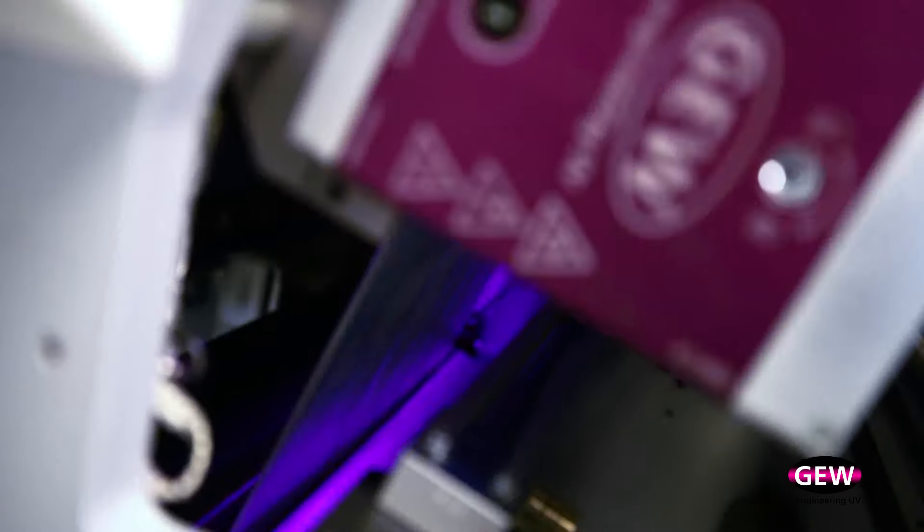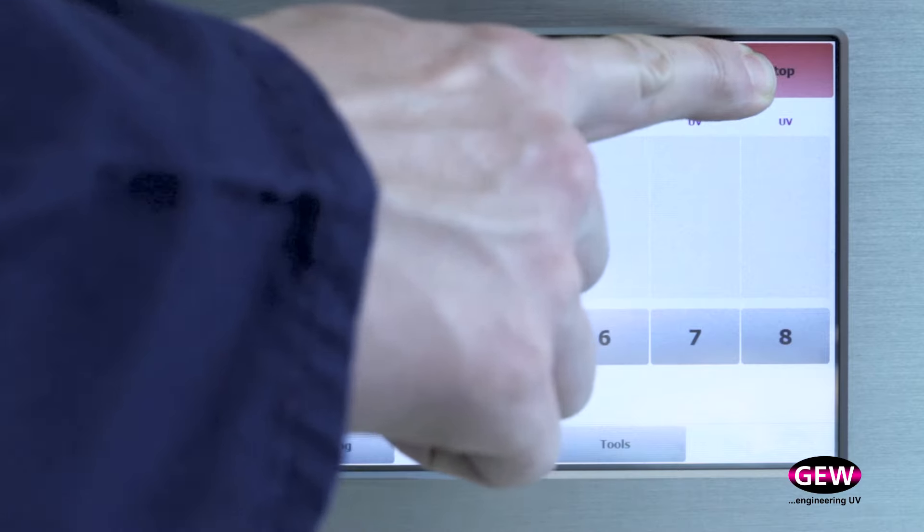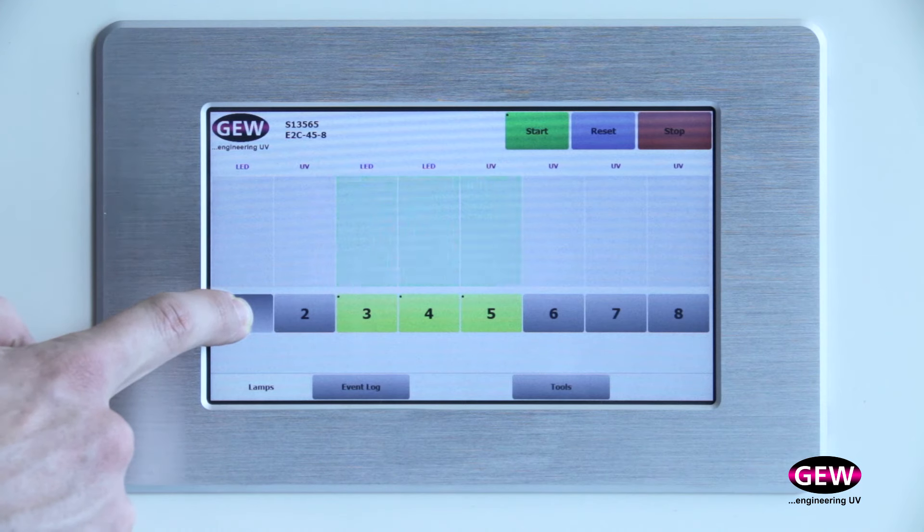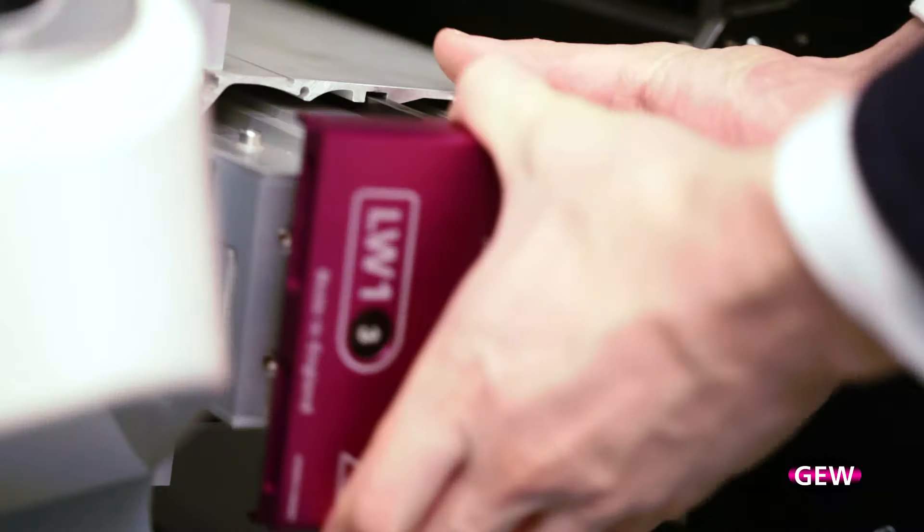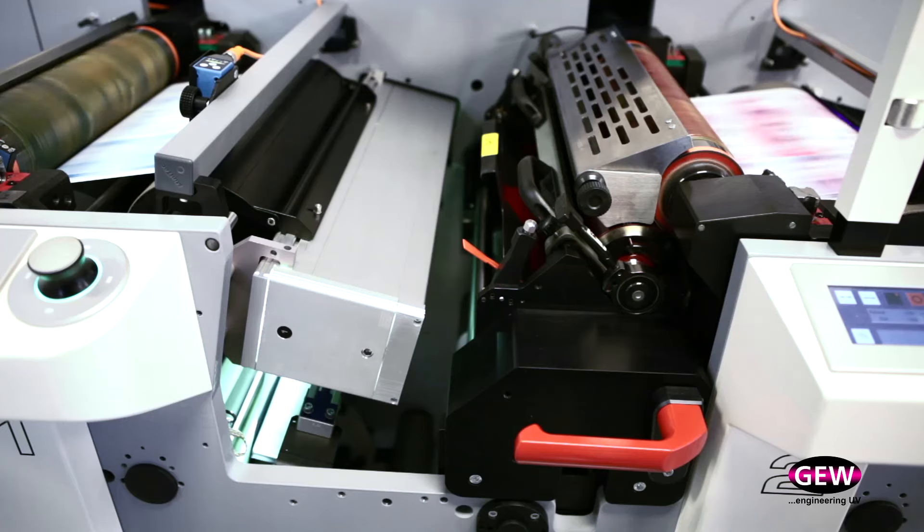Switching back from LED to arc lamp curing is even quicker. With no cool down period needed for the LEDs, simply deselect the lamp, swap the cassettes over and the arc system is ready to start.